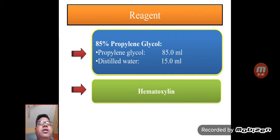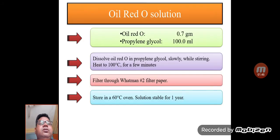The second reagent is hematoxylin, which is used as a nuclear stain. The Oil Red O solution consists of 0.7 grams Oil Red O powder and 100 ml propylene glycol, dissolved in the propylene glycol.